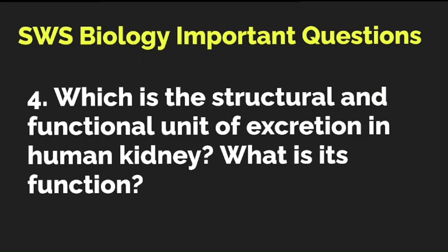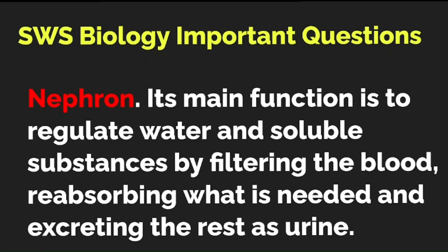Which is the structural and functional unit of excretion in the human kidney, and what is its function? This is like a two-mark question — you need to identify it and state its function. The correct answer is the nephron. Its main function is to regulate water and soluble substances by filtering the blood, reabsorbing what is needed, and excreting the rest as urine.